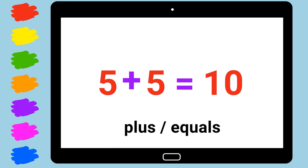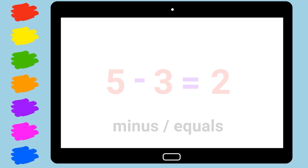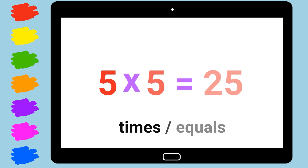Five plus five equals ten. Five minus three equals two. Five times five equals twenty-five.